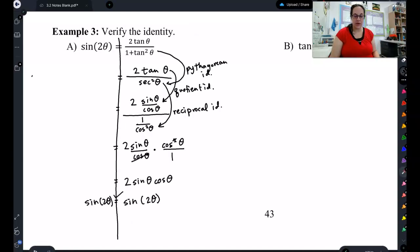Let's check what you got. I changed 1 plus tangent squared to secant squared using the Pythagorean identity. Then I changed tangent to sine over cosine using the quotient identity. Changed secant squared to 1 over cosine squared using the reciprocal identity. Then I did keep switch flip, and found that my cosines canceled, which ended with 2 sine cosine, which is sine of 2θ.